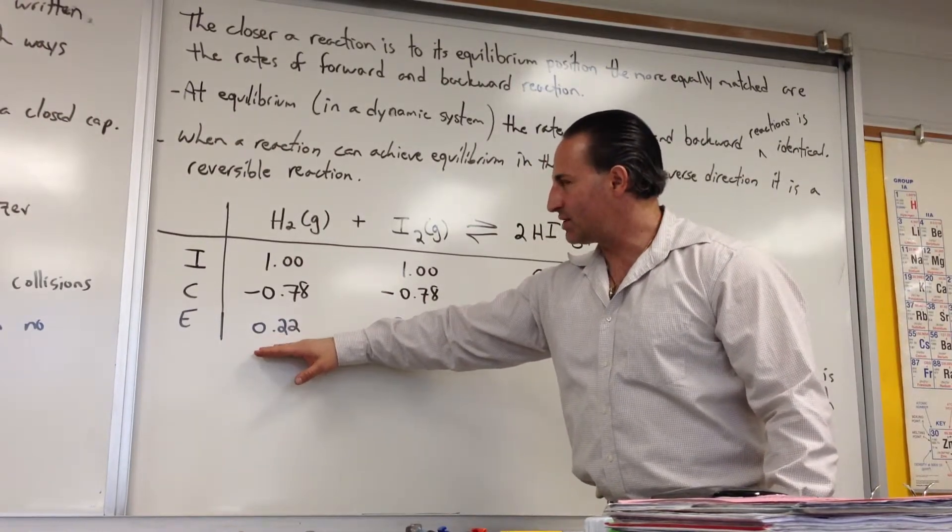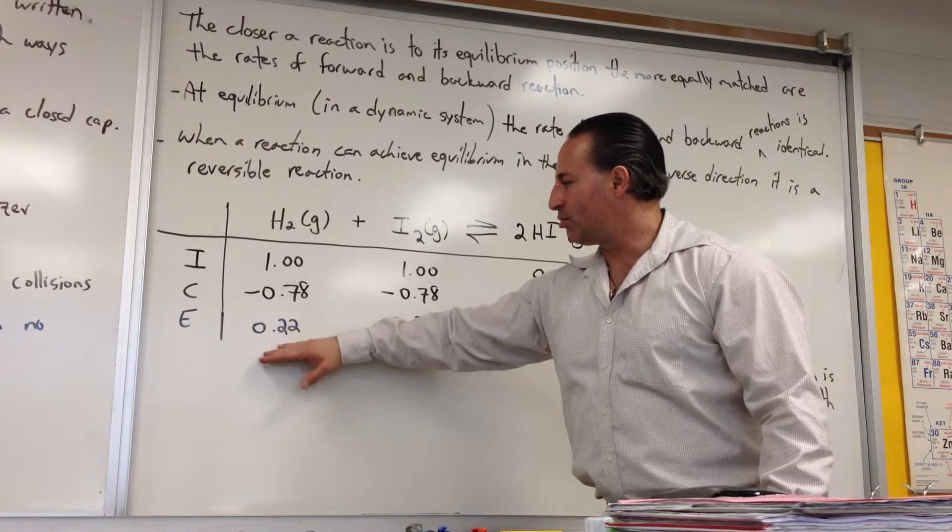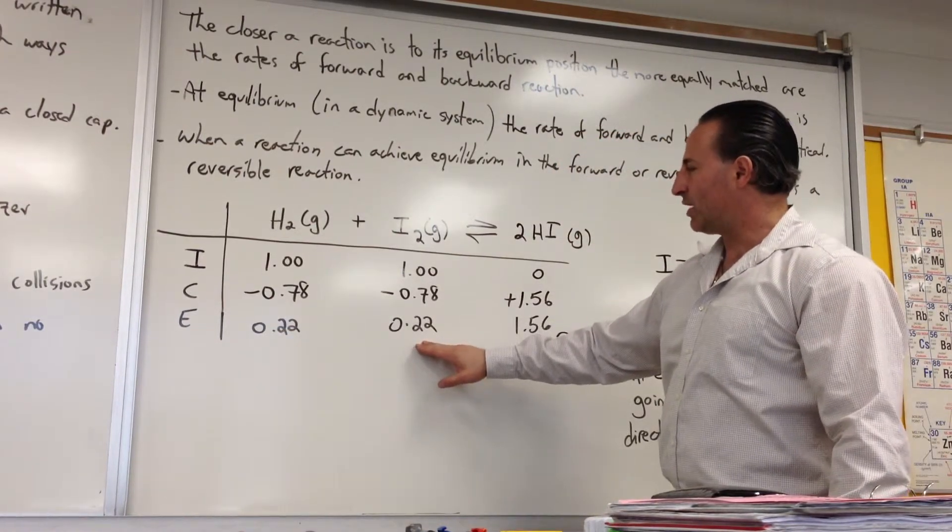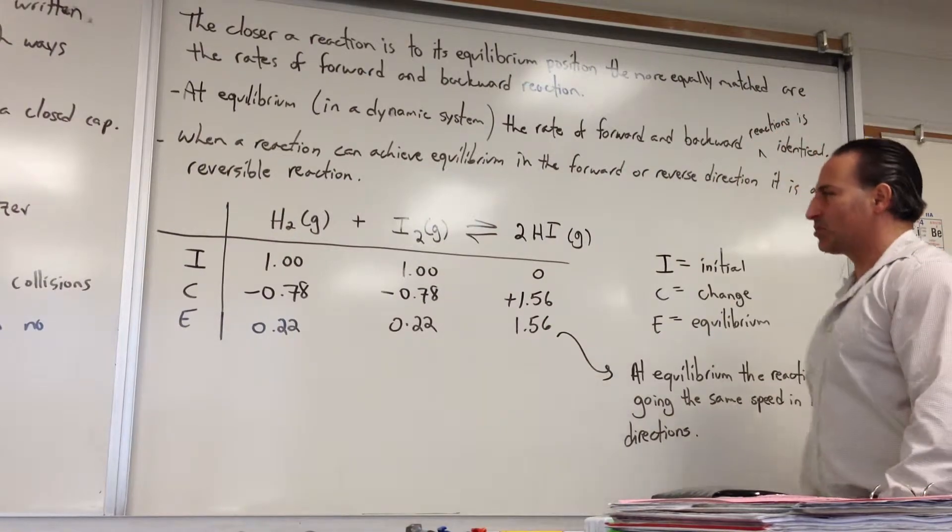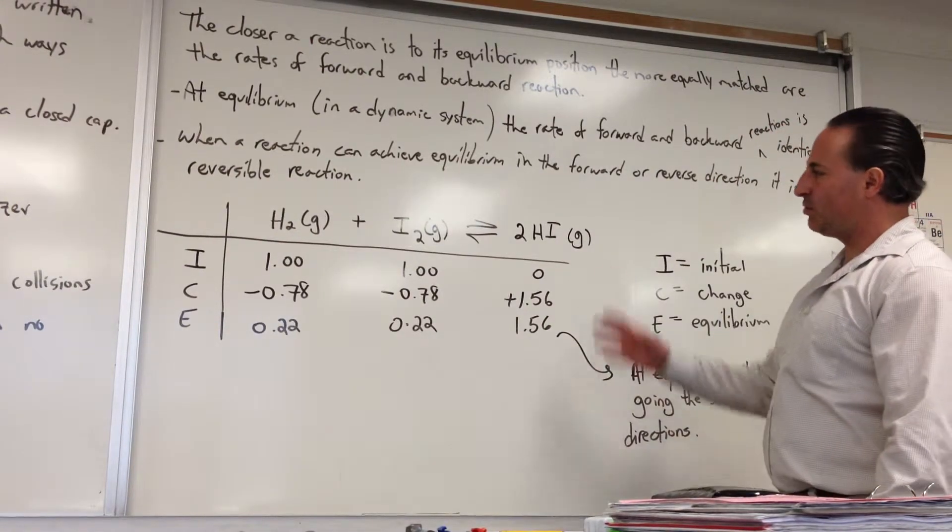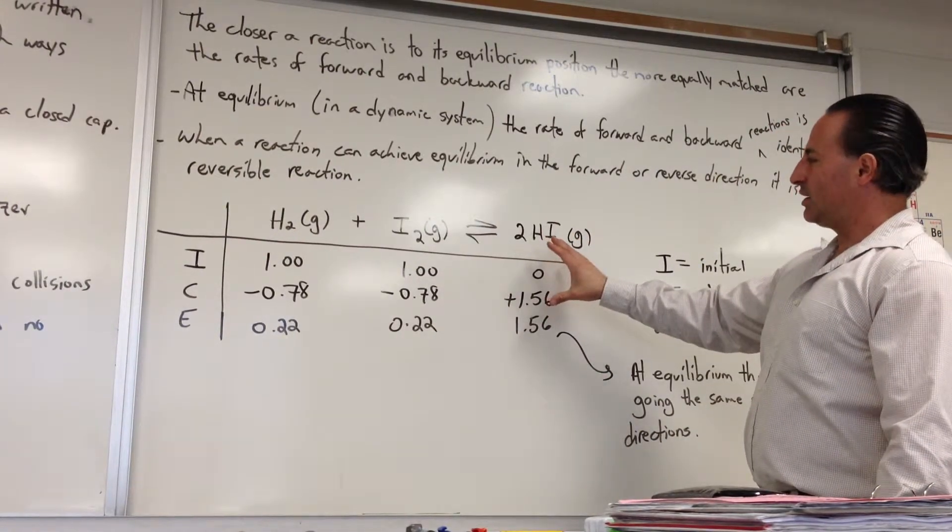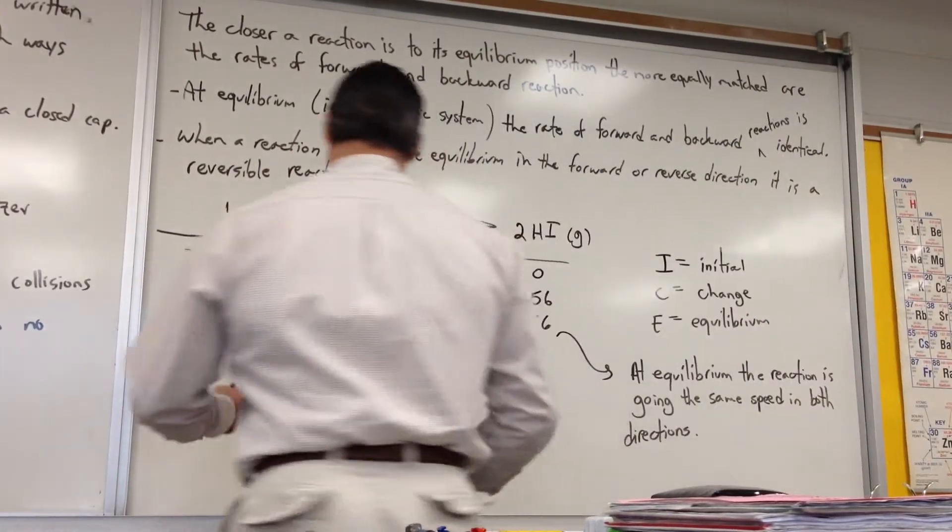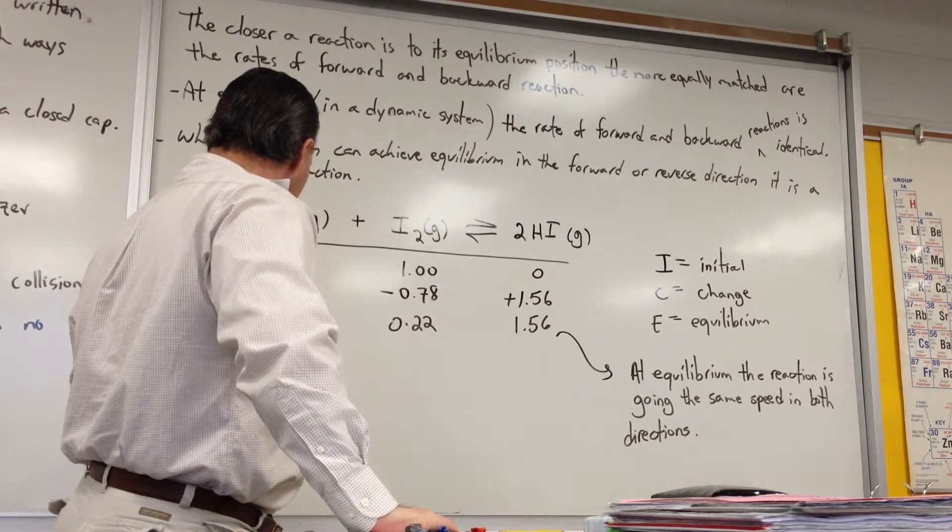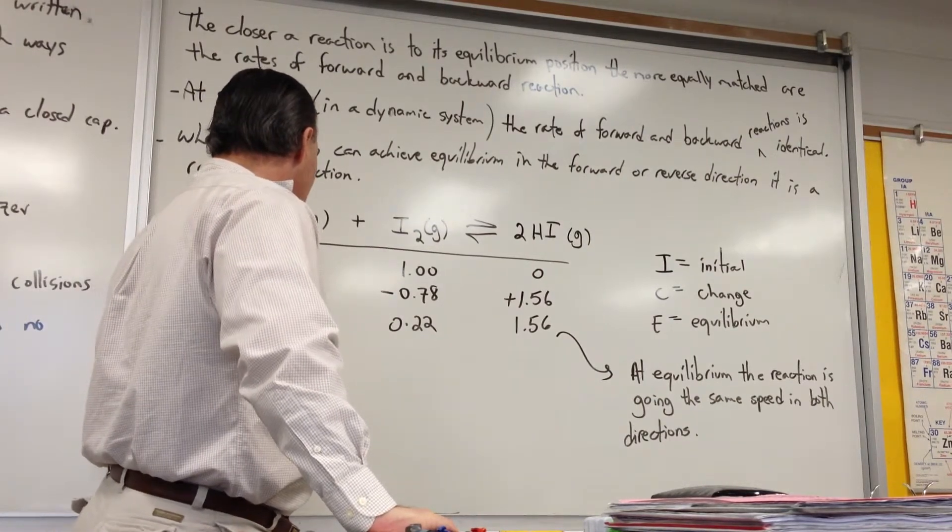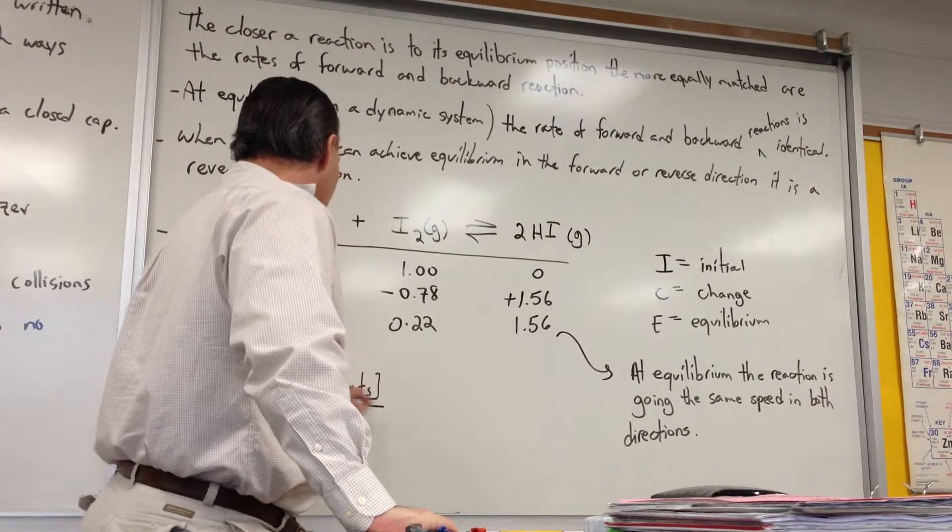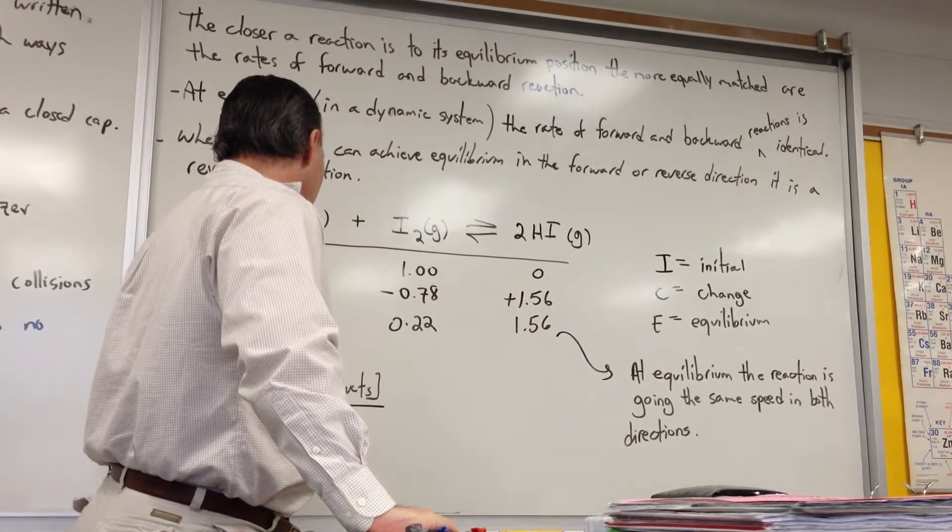Then once the reaction is over, at equilibrium, you have a steady state concentration of hydrogen of 0.22 moles per liter, 0.22 moles per liter of iodine, and 1.56 moles per liter of hydroiotic acid. And if you wanted to show the equilibrium constant for this reaction at this particular temperature, you would state K is equal to the concentration of products over the concentration of reactants.